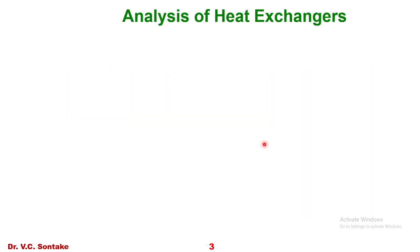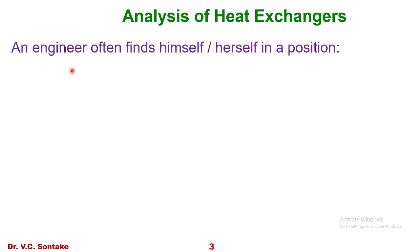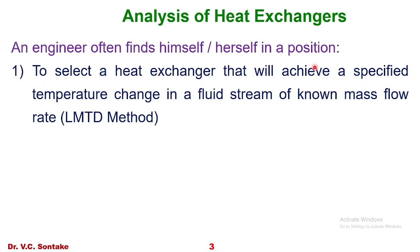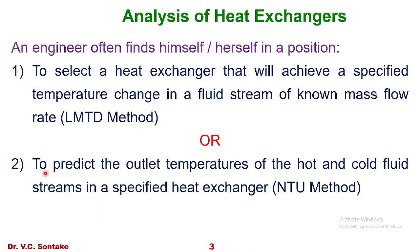Let us start the first objective. An engineer often finds himself or herself in two situations. Situation 1: to select a heat exchanger that will achieve a specified temperature change in a fluid stream of known mass flow rate — this is handled by the LMTD method. Or, situation 2: to predict the outlet temperatures of the hot and cold fluid streams in a specified heat exchanger — this is handled by the NTU method.